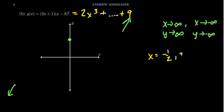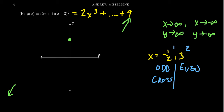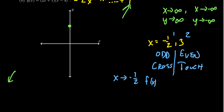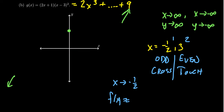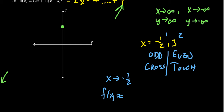The other x-intercept is at positive 3. In terms of multiplicity, 2x+1 appears as a factor once, so x = −1/2 has multiplicity 1. The factor (x−3) appears twice, so x = 3 has multiplicity 2. The first has odd multiplicity, meaning it will cross the x-axis. But x = 3 has even multiplicity, meaning the function touches the x-axis but does not cross it.